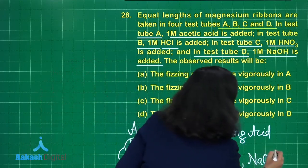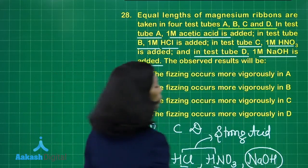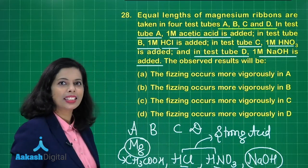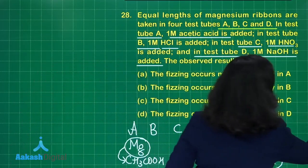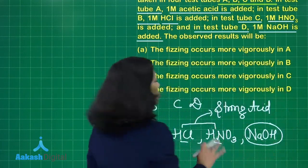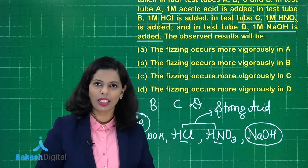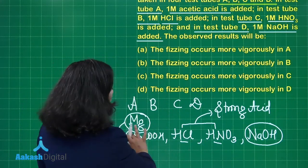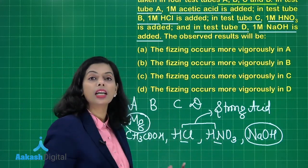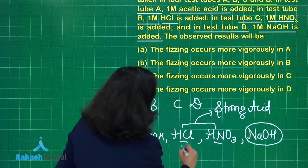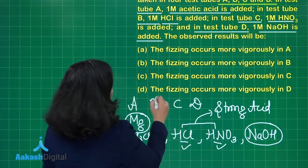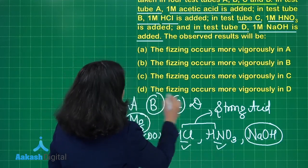But if I am talking about NaOH, what is it doing? It is a base. As it is a base, this NaOH is not going to react with magnesium. Magnesium is not reacting with strong base. So it's reacting with these three, but the more fizzing sound you will observe in this case and this case. It means test tube B and test tube C.